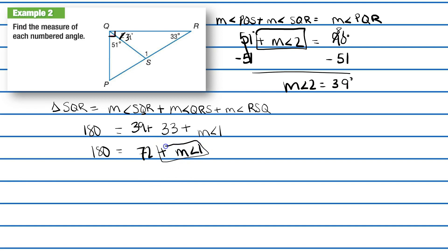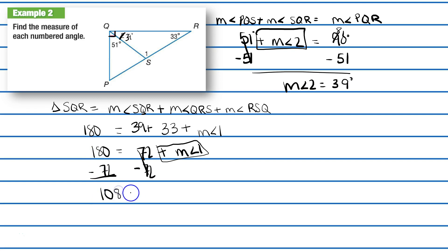We want to isolate angle 1, so subtract 72 from both sides. We get 108 degrees equals the measure of angle 1. So angle 1 is 108 degrees.